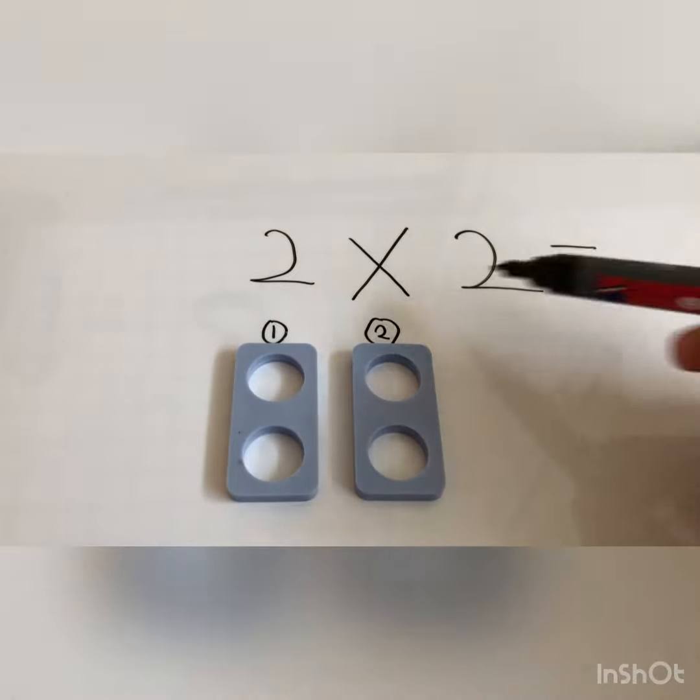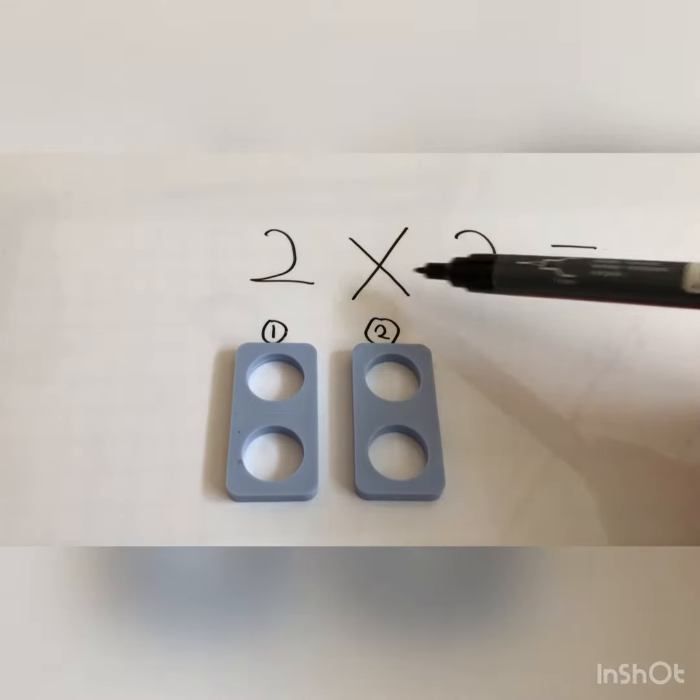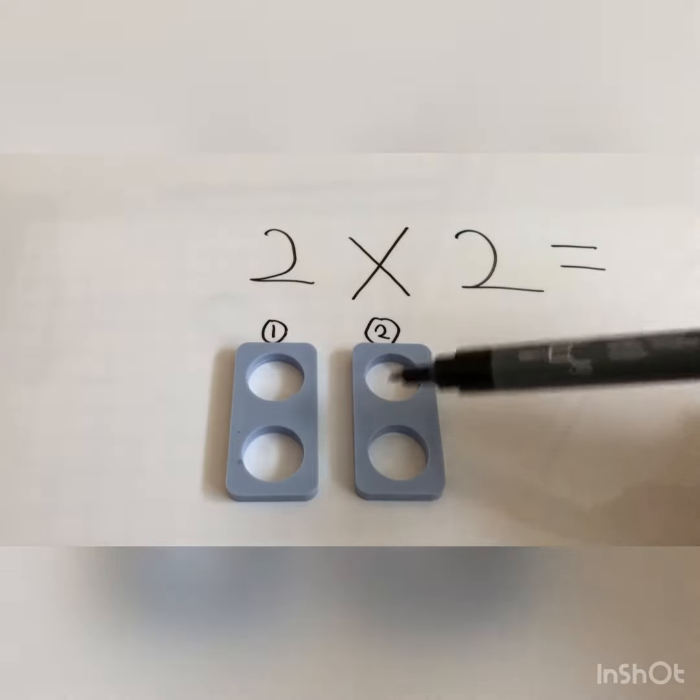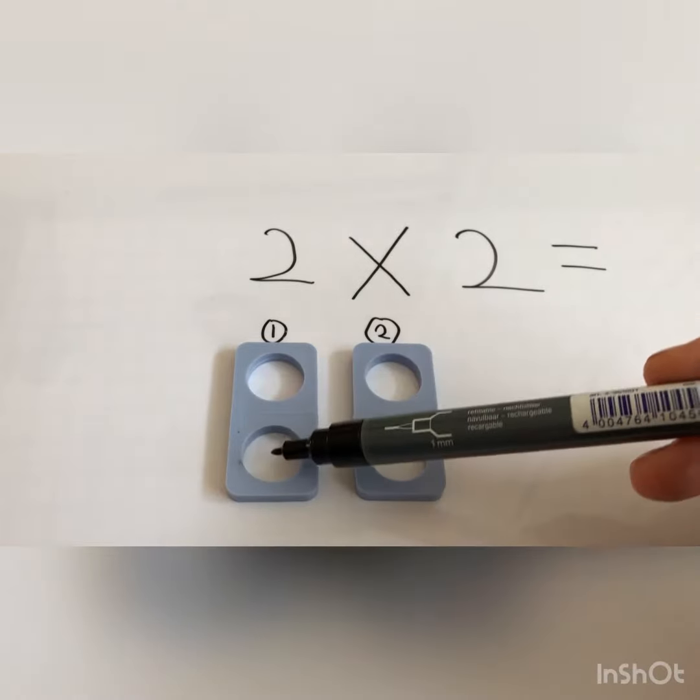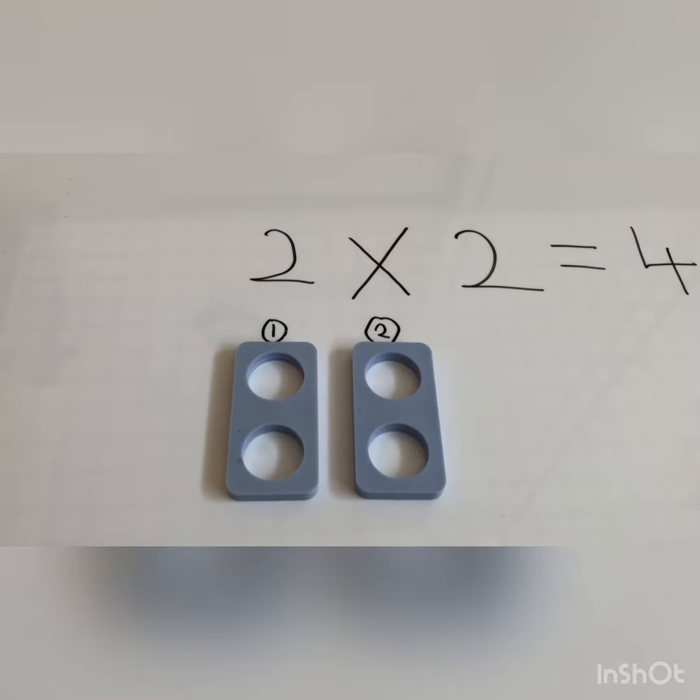The answer is how many there are all together because we've got two groups of two. It means that we've got one group of two and another group of two. So all together we have four. One, two, three, four. So our answer is four. Two times two is four.